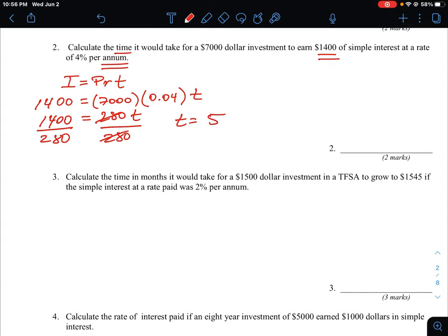But because the interest rate was quoted per annum, the time by default is going to be in years. So we will just say t here is equal to 5 years in terms of that question. So that's a simple way to just work through question two.